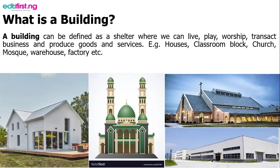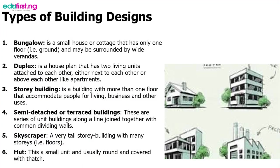What are the types of building we have by their design? There are various types of building and can be identified by their design and construction. The first one is bungalow. This is a small house or cottage that has only one floor — that is, the ground floor — and may be surrounded by wide verandas.